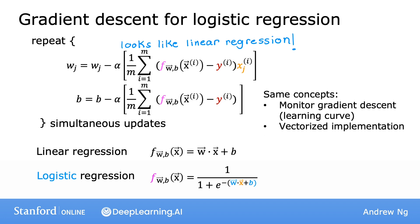So now you know how to implement gradient descent for logistic regression. You might also remember feature scaling when we were using linear regression, where you saw how feature scaling, that is scaling all the features to take on similar ranges of values, say between negative one and plus one, how that can help gradient descent to converge faster. Feature scaling applied the same way can also speed up gradient descent for logistic regression.